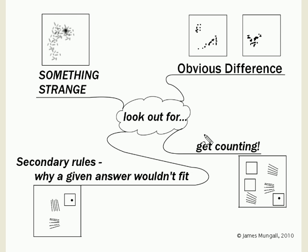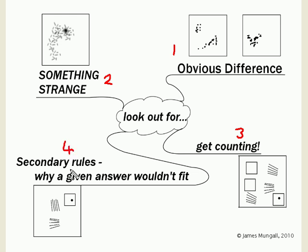Let's generalize. Ideally you see an obvious difference between the sets — if you can see it, great. But if not, there's probably something strange in there to look at, something a little bit odd which is likely the key to finding the pattern. Because of the nature of these tests, get counting. Don't put it off — start counting the numbers of sides, angles, shapes, funny dots, curved edges, or whatever stands out as worthy of looking at in detail. Finally, once you've got some kind of rule and are assigning answers, make sure they definitely fit into the set — you may well find some secondary rule. Do get practicing and enjoy puzzling over these tests.